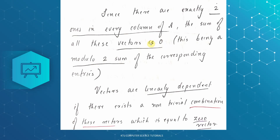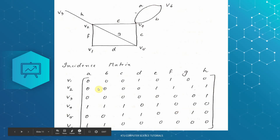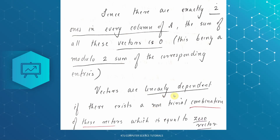We have a 0 vector as the result of the sum, and that means we have linearly dependent vectors. If we add these vectors, the result is 0. That means we have linearly dependent vectors.